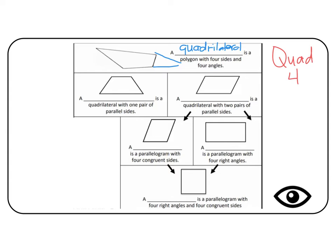In the next row, we have another quadrilateral, and this one has one pair of parallel sides. If it has one pair of parallel sides, then it gets a specific name. That name is trapezoid.